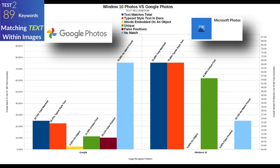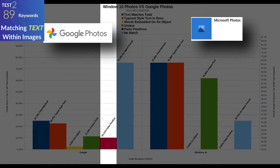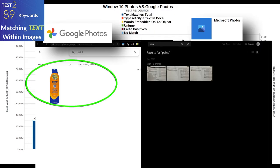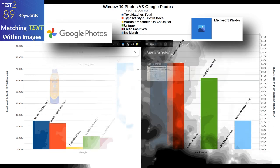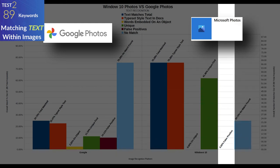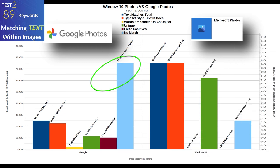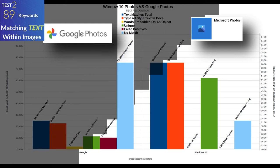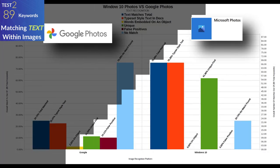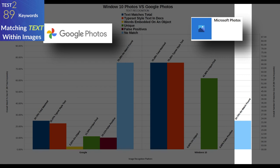The only platform with notable false positives was Google Photos — about 9 out of 89 searches returned an object image that didn't directly associate with the keyword searched, so roughly 10% false positive rate. Windows 10 had essentially no false positives; if it didn't find it, it simply returned nothing. For no-match results, Google found nothing 75.28% of the time during the 89 searches, while Windows found nothing only 24.72% of the time.